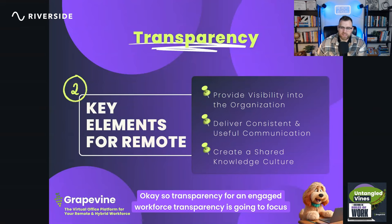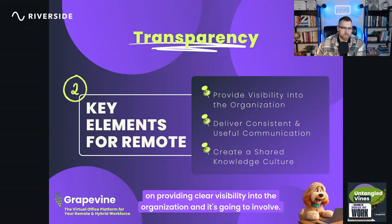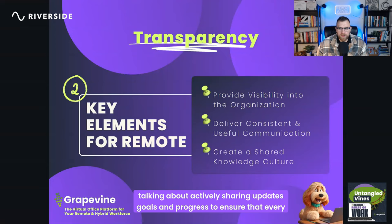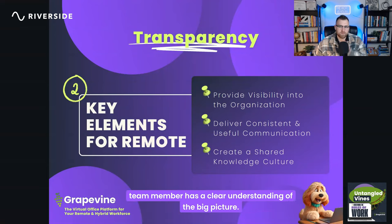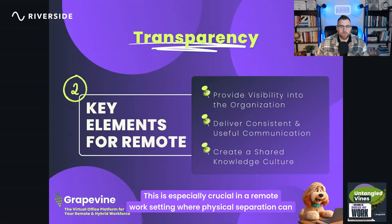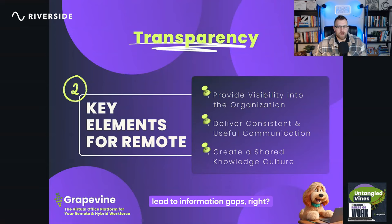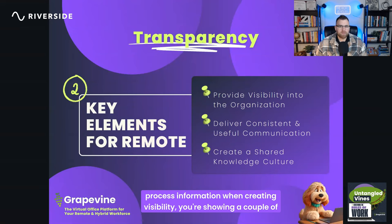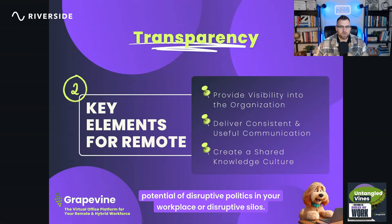Transparency for an engaged workforce focuses on providing clear visibility into the organization. This means actively sharing updates, goals, and progress so every team member has a clear understanding of the big picture — especially crucial in a remote setting where physical separation can lead to information gaps. Many leaders underestimate their employees' ability to process information. When creating visibility, you show employees you trust them and reduce the potential for disruptive politics or silos.